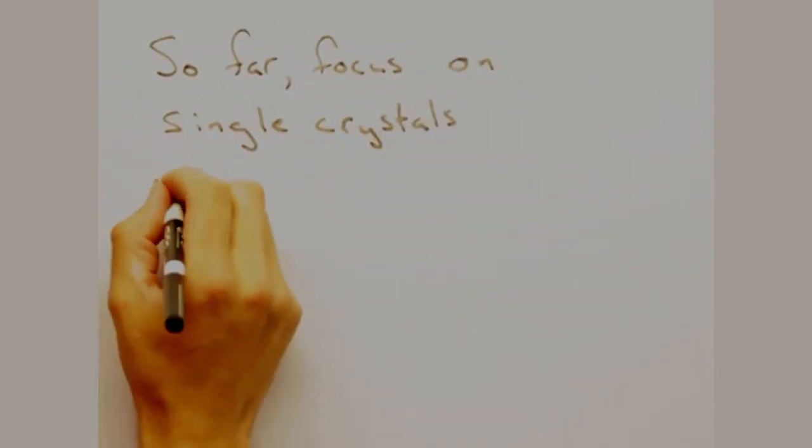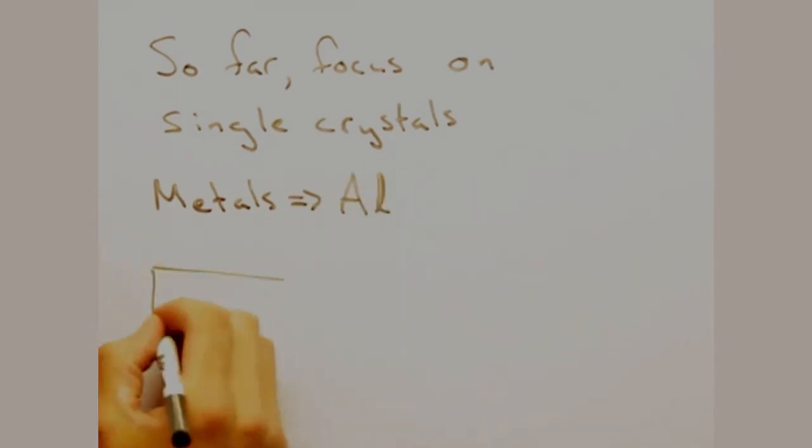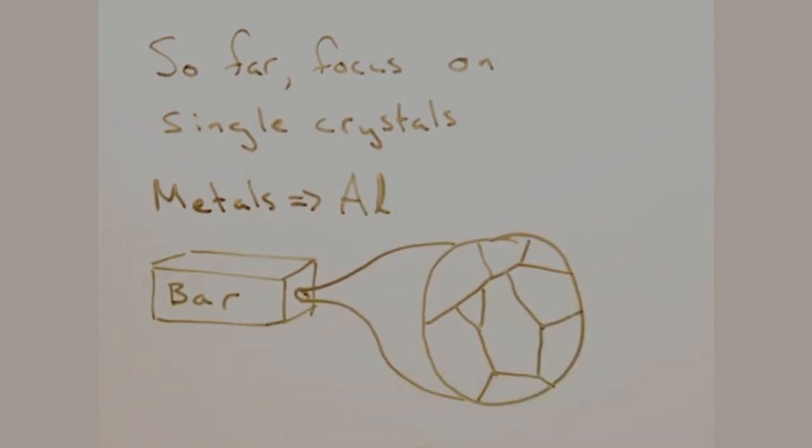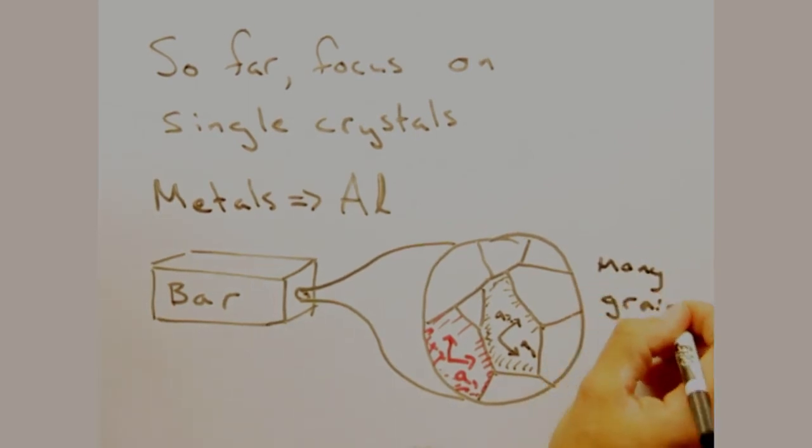So far, we've focused on single crystals. But in practice, many metals, such as aluminum, are composed of many small crystals in different orientations. So aluminum, while it doesn't have facets, does indeed have a microscopic crystal structure.